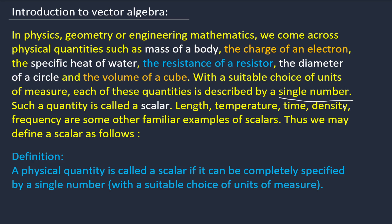For example, length can be 5 centimeters, 15 centimeters, or 10 kilometers — defined by a single number. Mass can be 1 kg, 2 kg, or some grams. Whenever we define a quantity by a single number, those are called scalars. Other examples of scalars include length, temperature, time, density, and frequency.